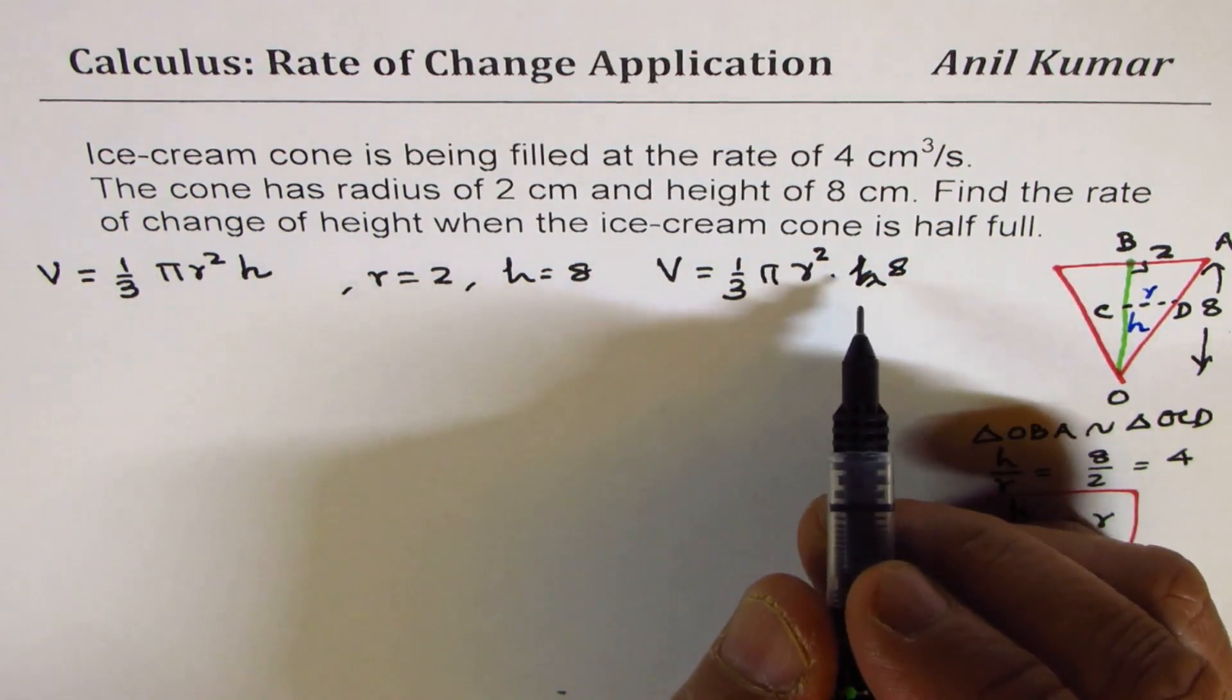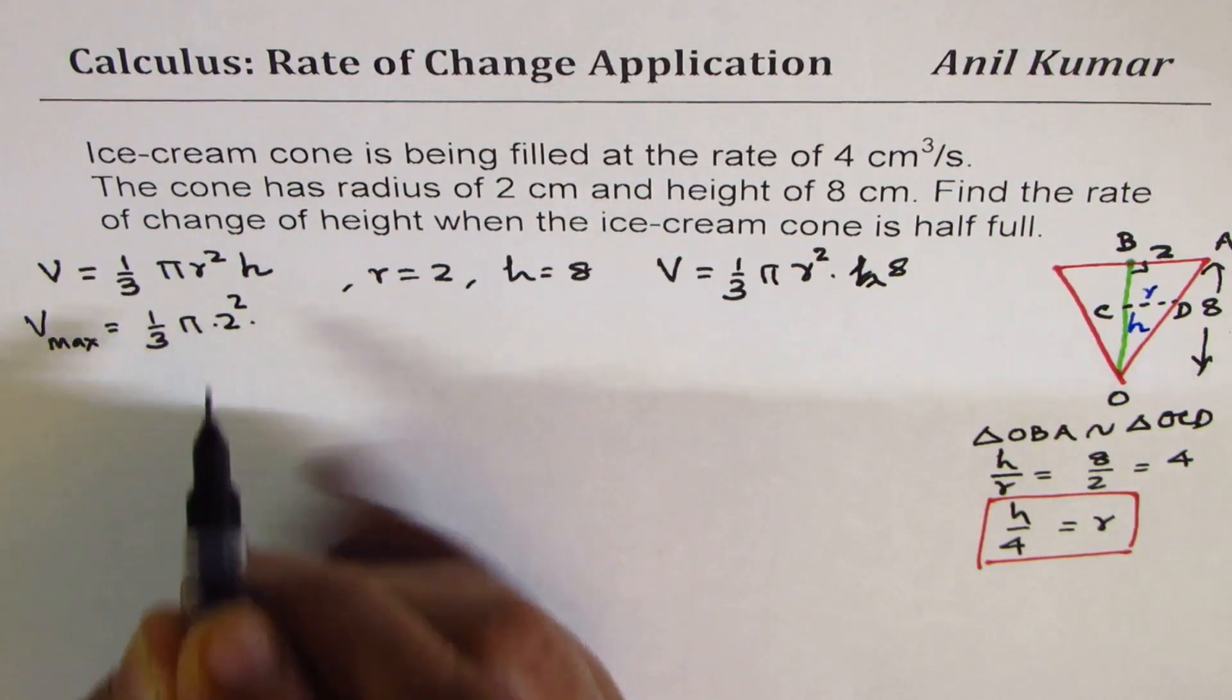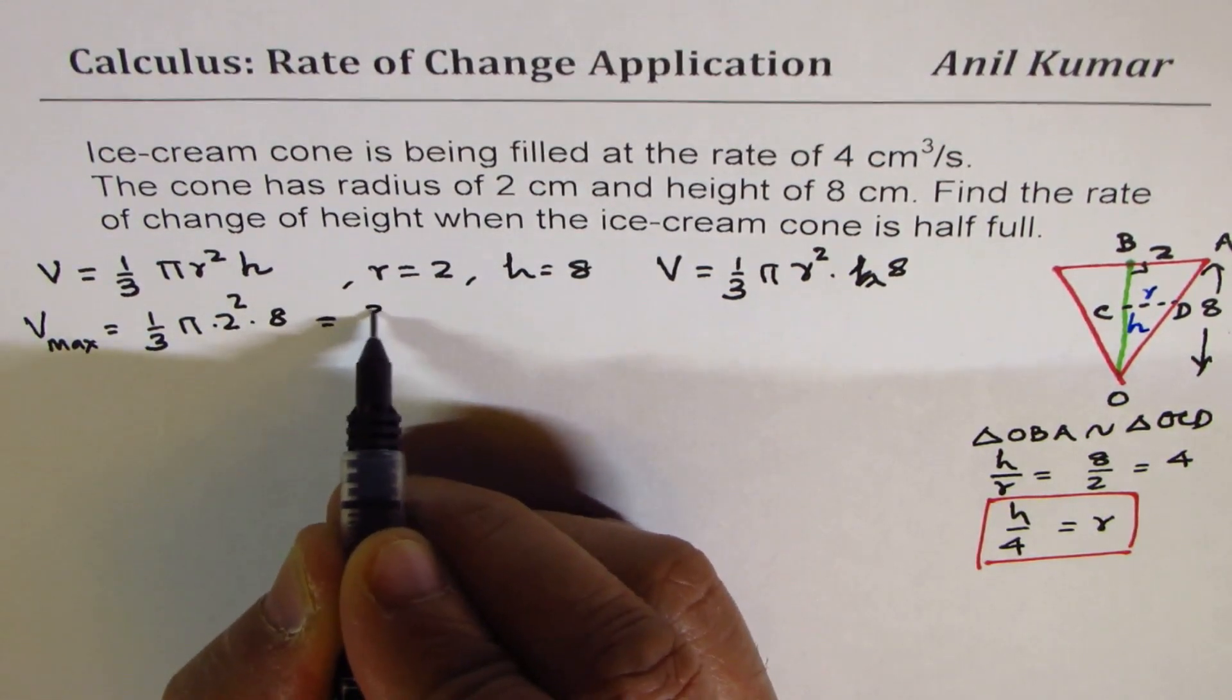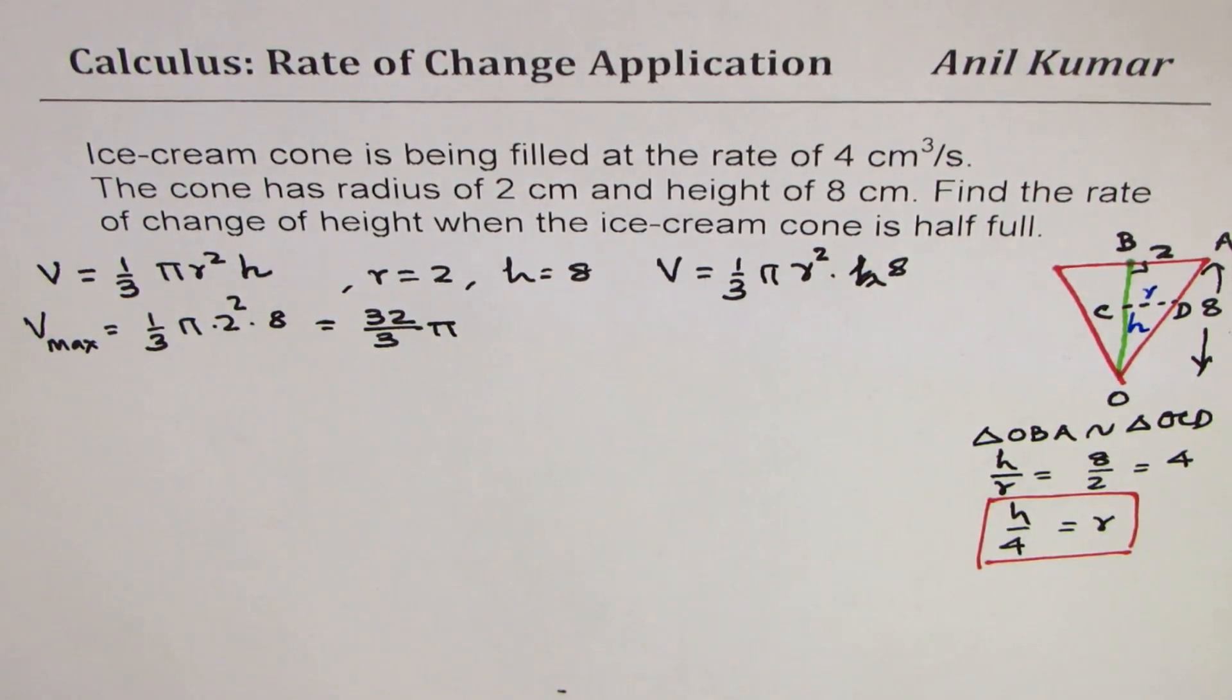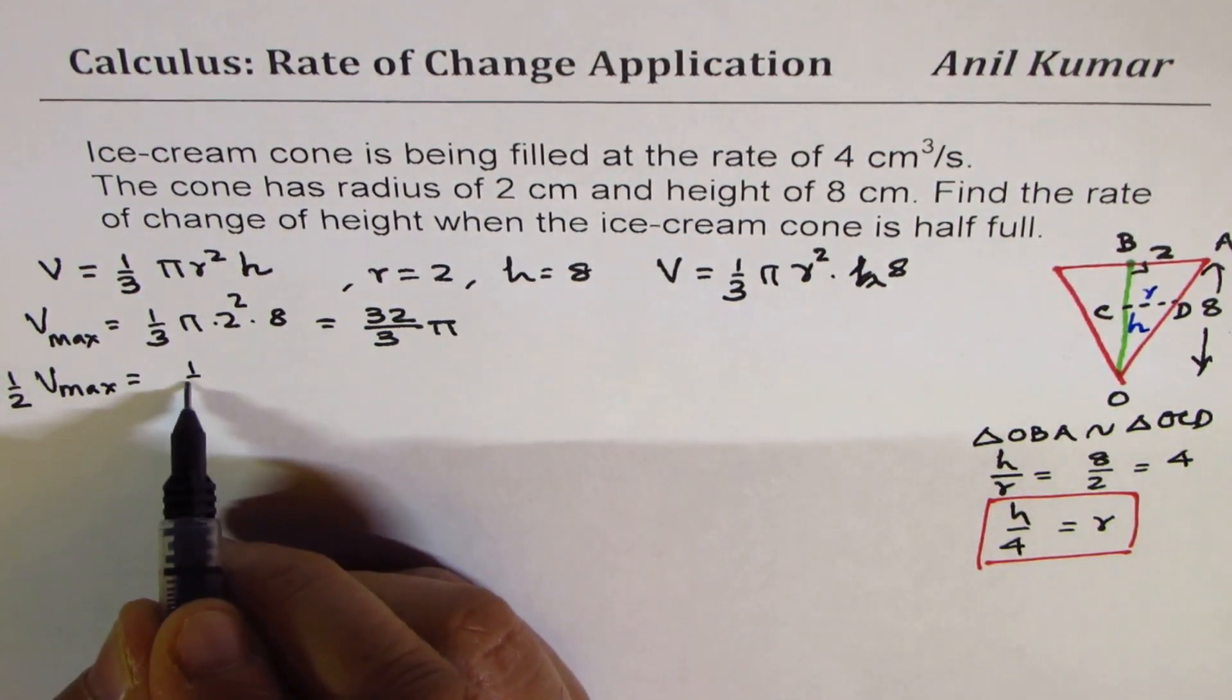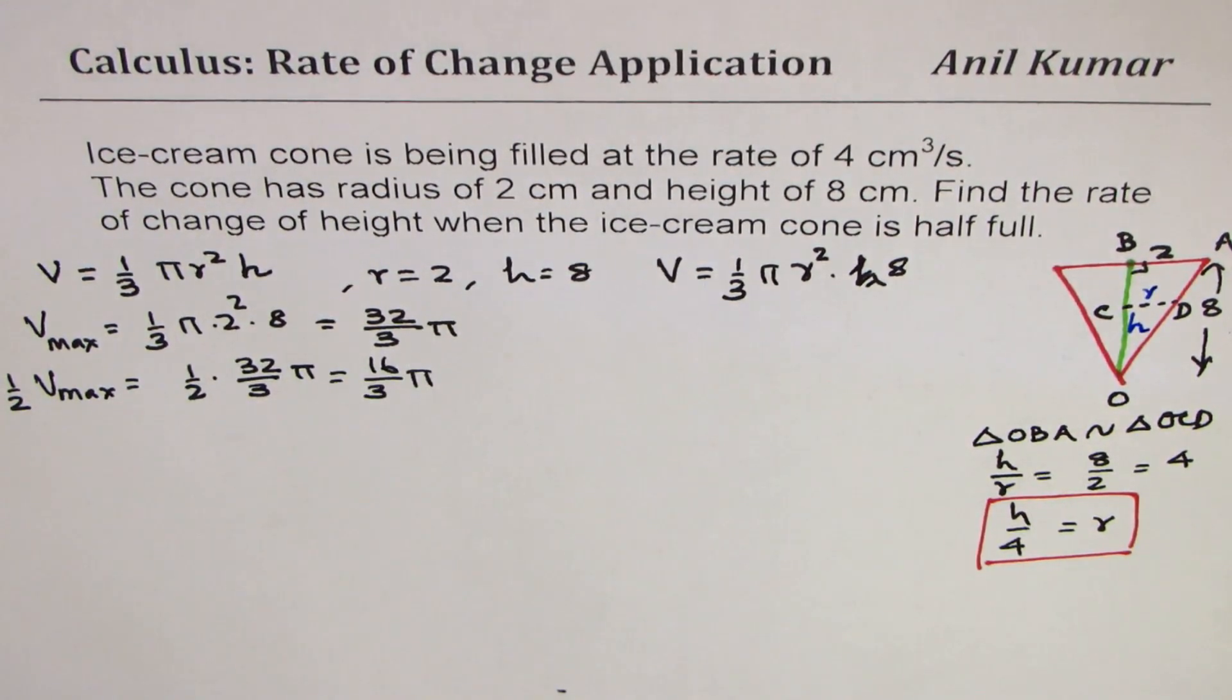I should write 8 here. Let me write here. So volume maximum, which is (1/3)π, radius is 2, so 2² times height of 8. So let's calculate how much is this. We can write in numbers 4 times 8 is 32. So let's write this as (32/3)π. That becomes the maximum volume of this particular cone. So half of this volume will be how much? Half of the maximum volume is going to be (16/3)π. So that is the half volume.